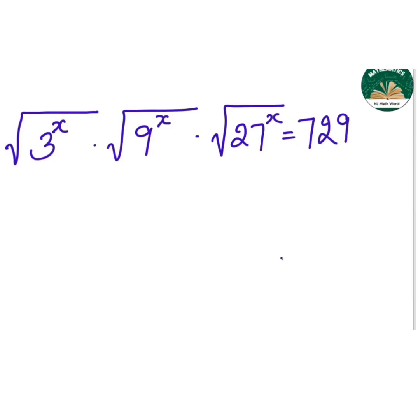So here we are going to solve for this x, find the x value. First of all, we will take all the roots together. Then it is 3^x into 9^x into 27^x. Because the roots are same, we can take it within one root. Then it is 729.